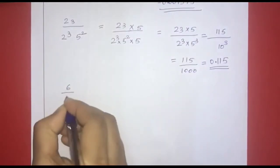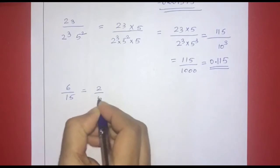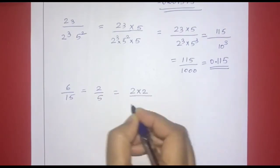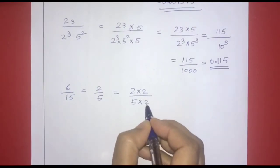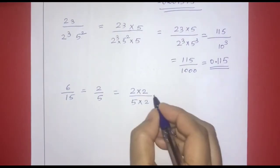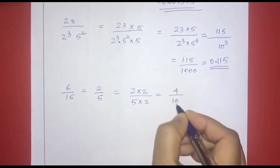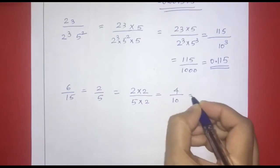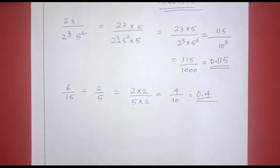For 6 by 15, which simplifies to 2 by 5: we multiply numerator and denominator by 2. That gives 4 by 10. Placing the decimal 1 place from the right, the decimal expansion is 0.4.